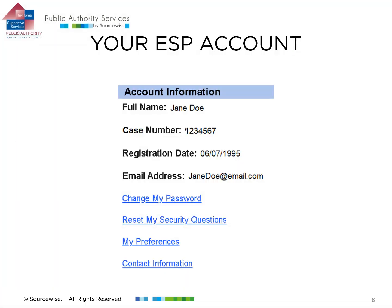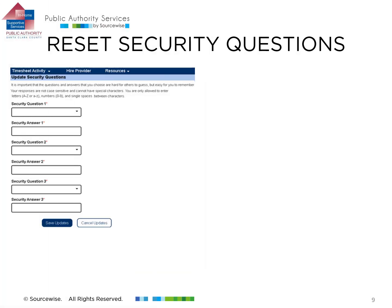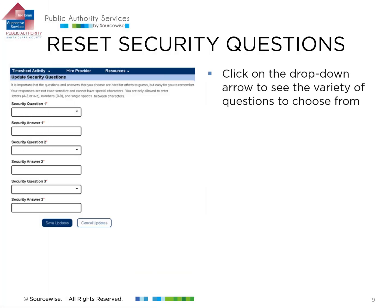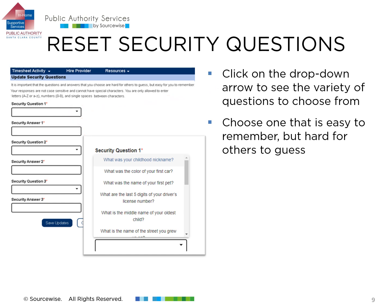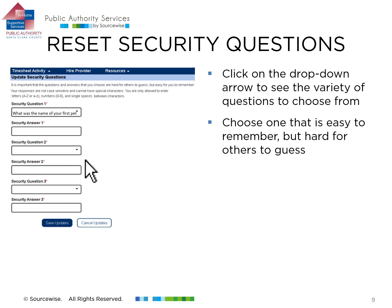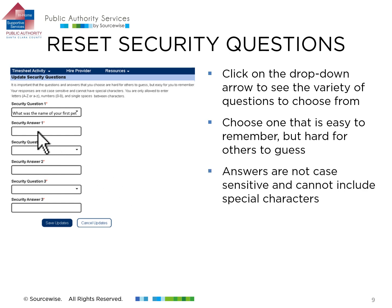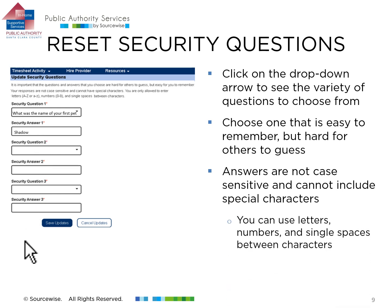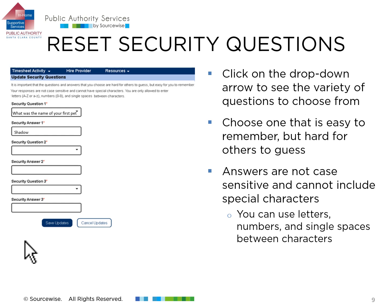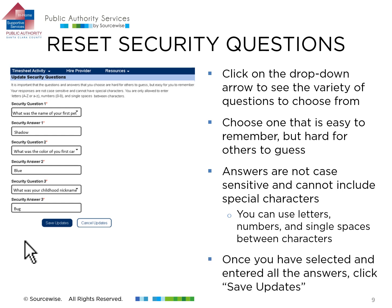Next, we will learn how to reset the security questions that you may be asked when logging in or making changes to your account. To choose new security questions, click the drop-down to open the question choices. To keep your account secure, choose questions that have answers easy for you to remember but are hard for others to guess. Answers are not case sensitive and cannot include special characters such as exclamation points. Only use letters, numbers, and single spaces. After selecting the questions and entering their answers, click the Save Updates button.